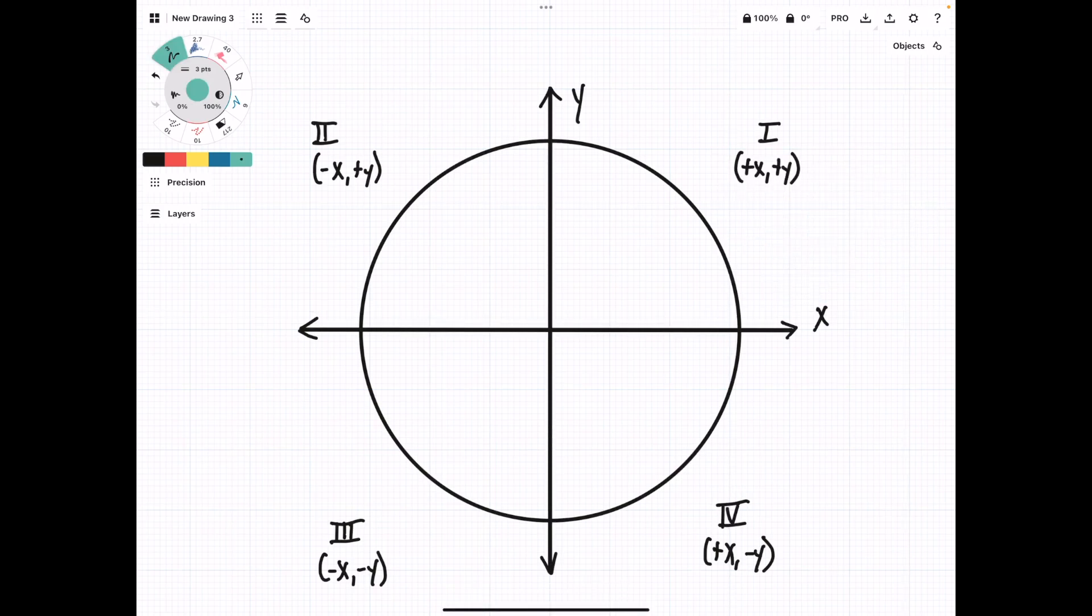So in quadrant 1, everything is positive: sine, cosine, tangent, cotangent, cosecant, and secant. So not super interesting to look at.